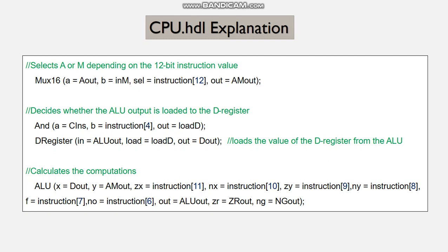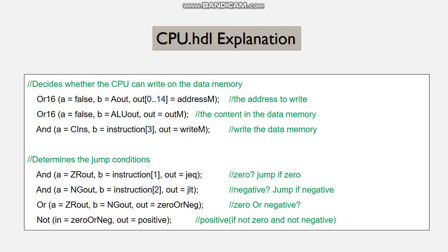The ALU has input control bits such as ZX, NX, ZY, NY, F, and NO, which are indicators of which function is computed on the two inputs to give the output. The output control bits such as ZR and NG determine the properties of the result. Next, coming to the OR and AND gate set, they set the ALU outputs in order to successfully write to the data memory. The first determines the address of the write operation, the second determines the content of the data memory, and finally the AND gate outputs the write value.